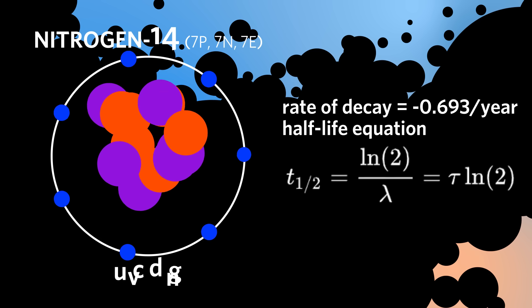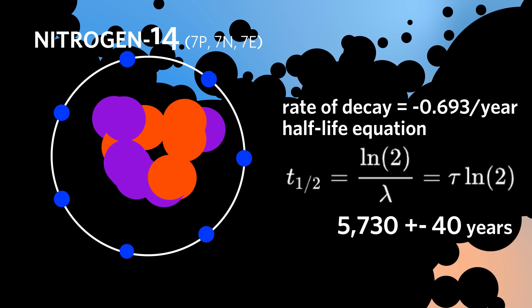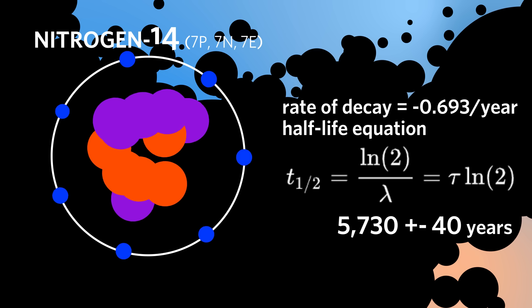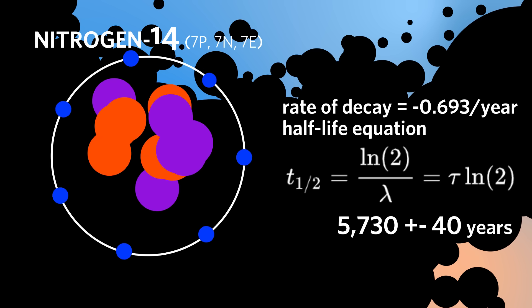When an isotope's half-life is up, half your original element will be gone, transformed into a different isotope. Another half-life, and you're down to a quarter of your original amount. A half-life after that, and you're down to an eighth, and so on. The length of a half-life is different for every isotope.